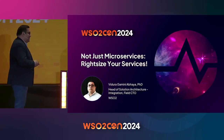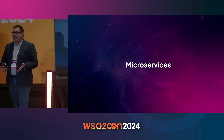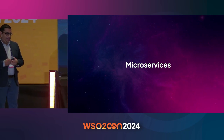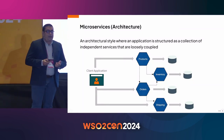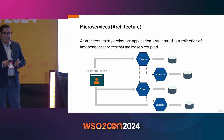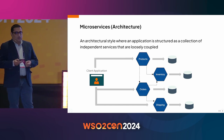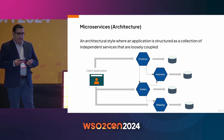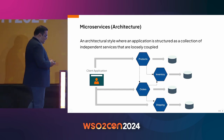So let's get into the talk. Microservices is an architecture style where an application is basically structured as a collection of independent services that are loosely coupled. This architecture was pioneered mainly by Netflix at the beginning, and then it caught on and became very popular.